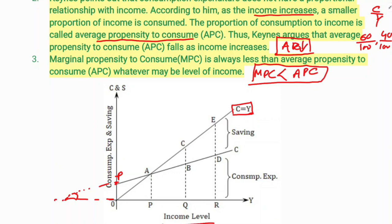When we measure the average propensity to consume, at the A point the angle from the origin to that point on the consumption curve gives the APC. At income level one, the average propensity to consume can be read from that angle. The APC changes at different income levels along the curve.